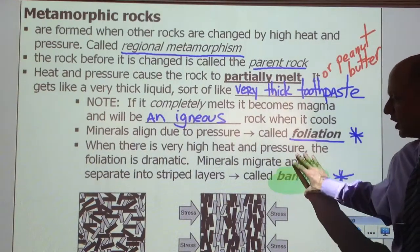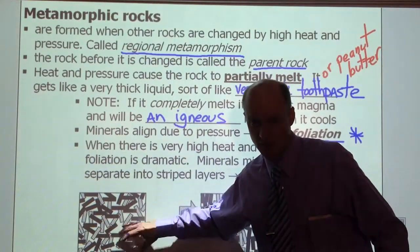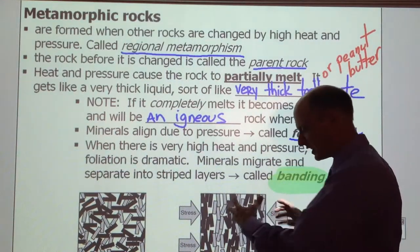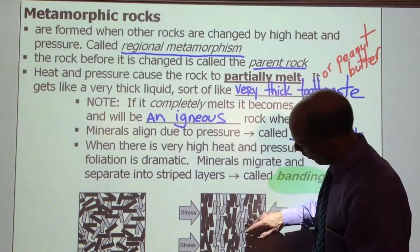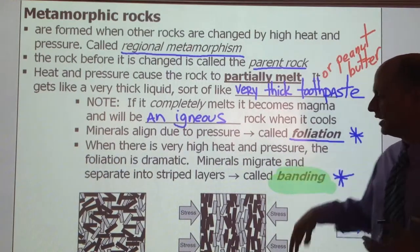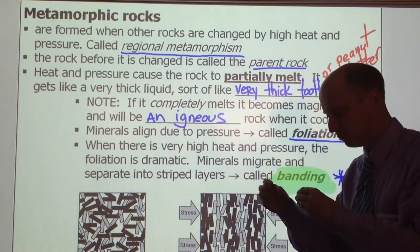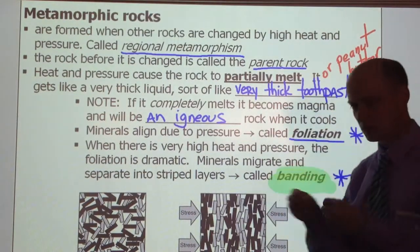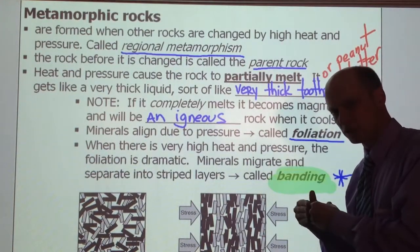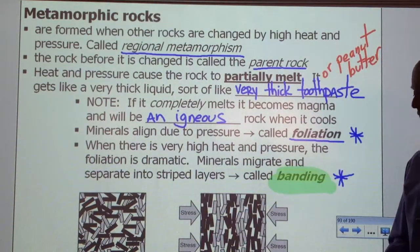This picture here really shows extreme foliation. When it's different colors, it's called banding. So you have a random mineral arrangement in an igneous rock, and then under a lot of pressure and heat — that thick peanut butter consistency — the pressure goes one way, and all the longer minerals line up perpendicular to the pressure. In this peanut butter consistency, the minerals actually tend to migrate and move, so similar minerals go together. The micas go with the micas and the quartz goes with the quartz, causing different colored layers — that's called banding.